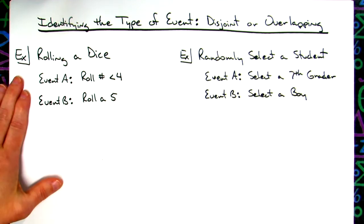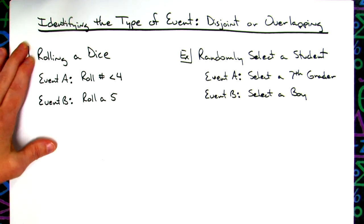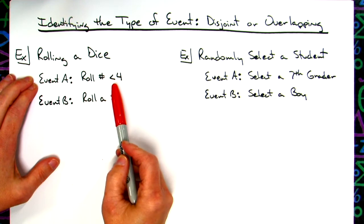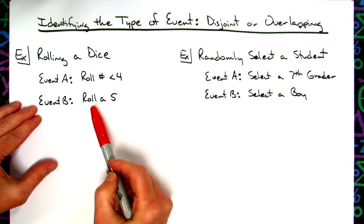In our first example, we're considering rolling a dice. Event A is roll a number less than four, and event B is roll a five.